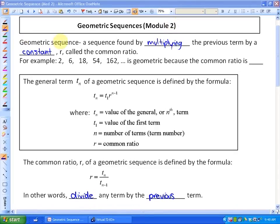First of all, as a review, geometric sequences are sequences found by multiplying the previous term by a constant r called the common ratio. So if you look at this sequence here: 2, 6, 18, 54, 162, etc., that's geometric because the common ratio in this particular case is 3. In other words, to get from one term to the next, you're always multiplying by 3.